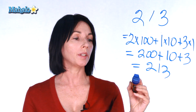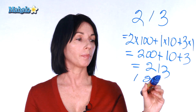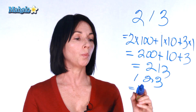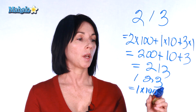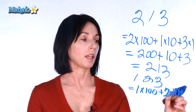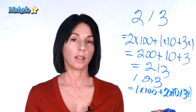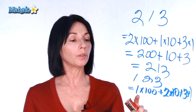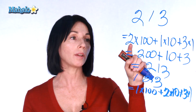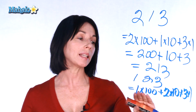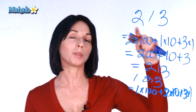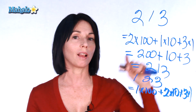For example, if we have the number 123 and we wrote it in expanded form, we would get 1 times 100, plus 2 times 10, plus 3 times 1. In this case we only have 1 times 100, whereas with 213 we have 2 times 100. So expanded form is actually what has led us to being able to write our numbers the way we do.